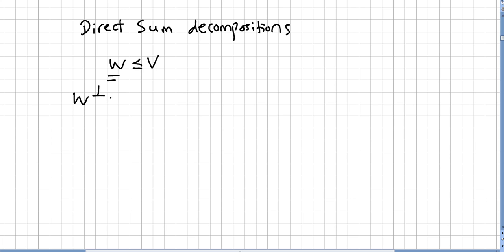So this is the notation for orthogonal: W⊥ = {v ∈ V | ⟨v, w⟩ = 0 for all w ∈ W}.